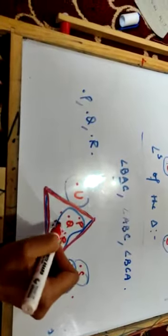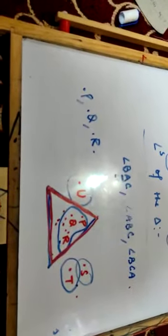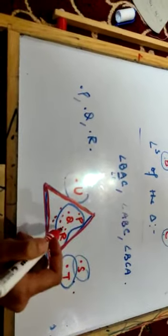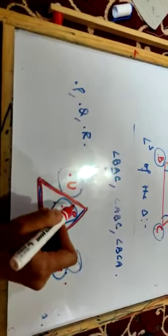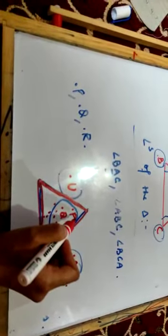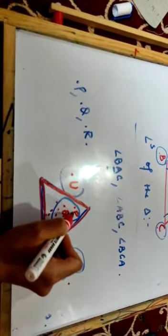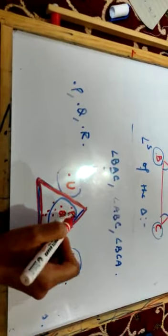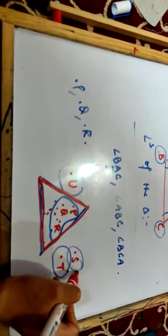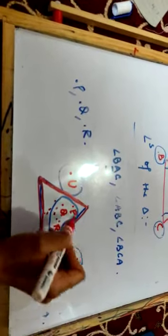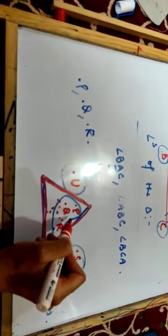Triangular region mein boundary aati hai triangle ki aur interior of the triangle aati hai. Now, let's note these things. First: points lying within the boundary of the triangle are said to be lying in the interior part of the triangle. Points lying outside the boundary of the triangle are said to be lying in the exterior part of the triangle. And the third point: the interior region along with the boundary of a triangle is known as the triangular region.